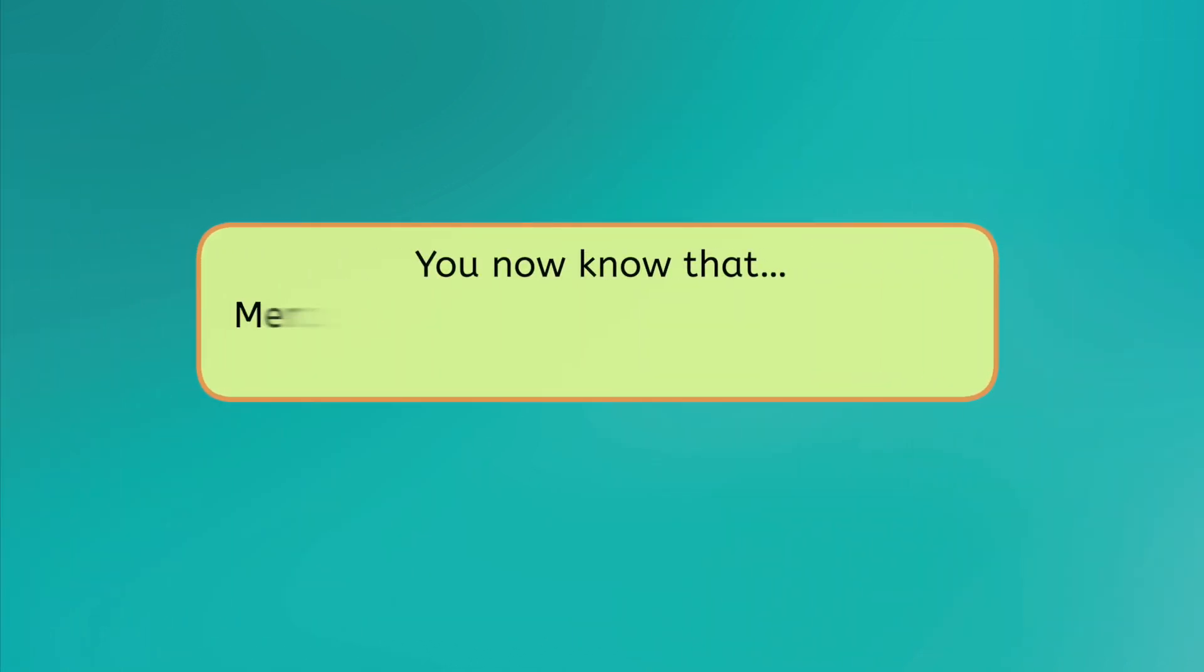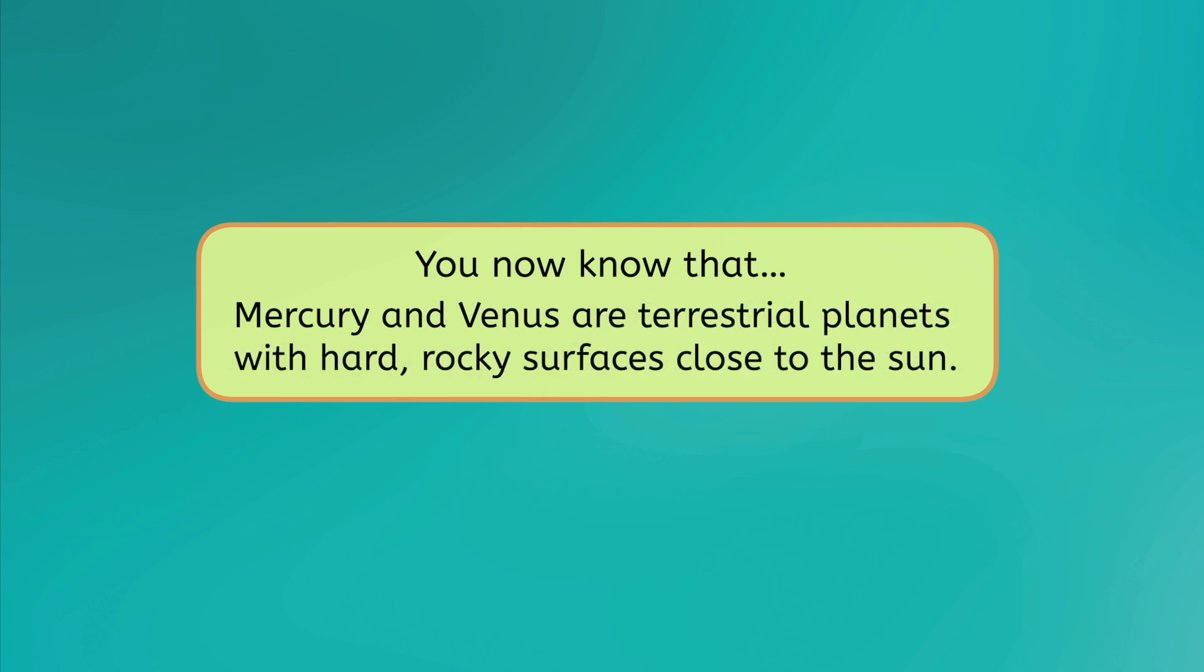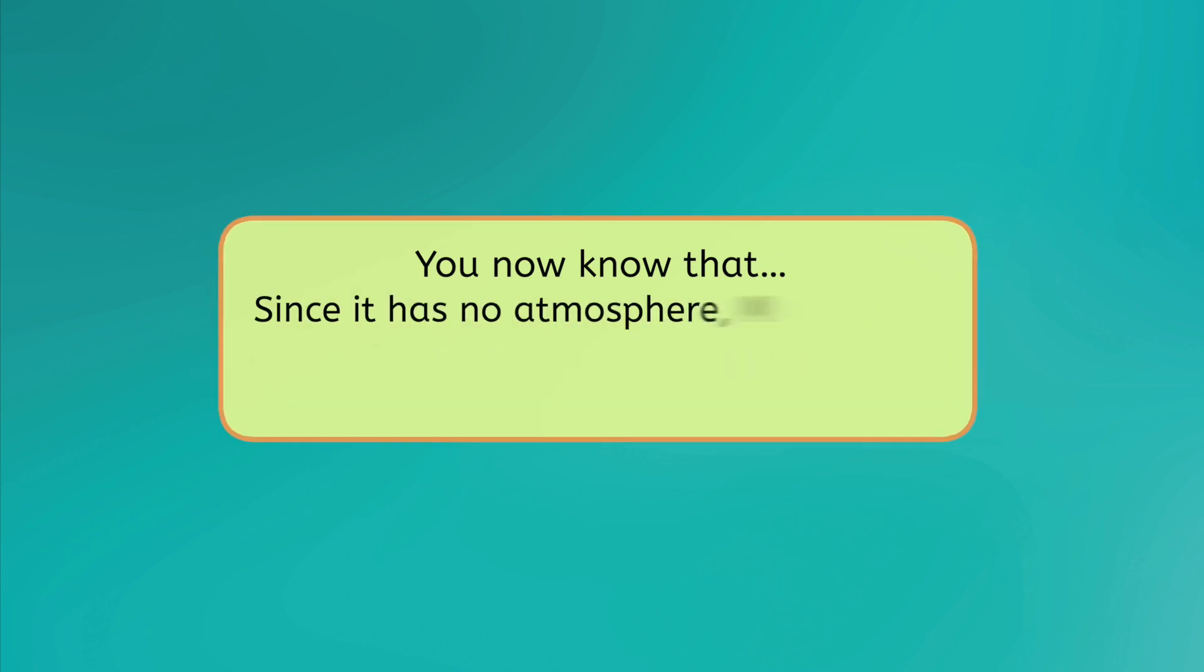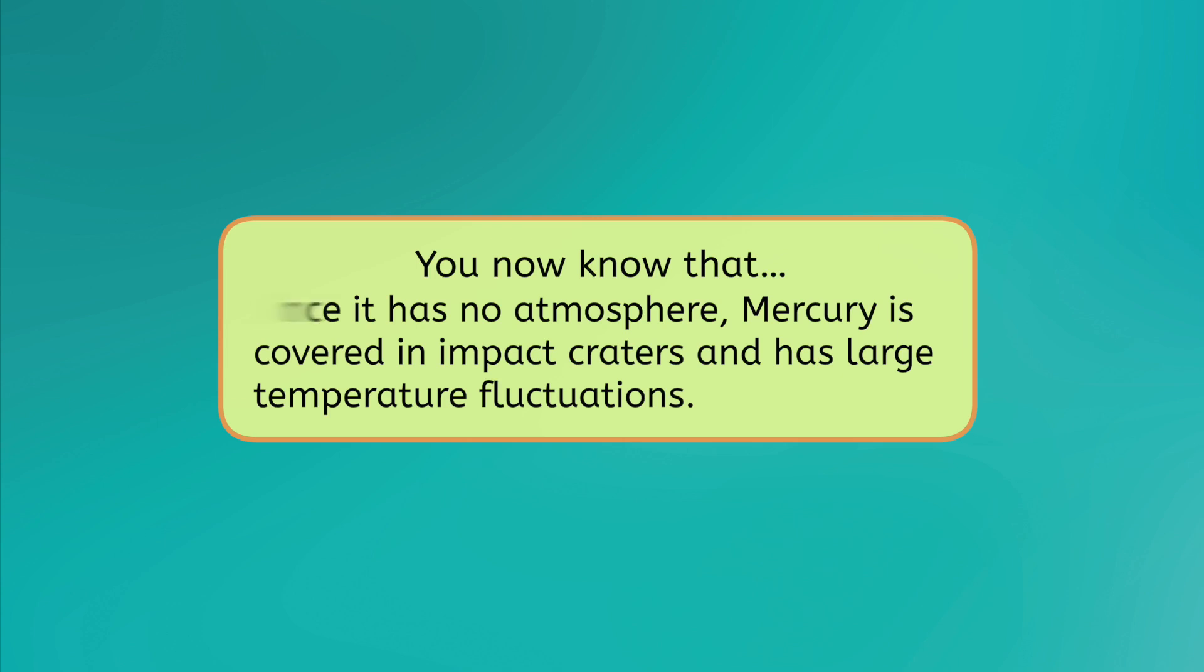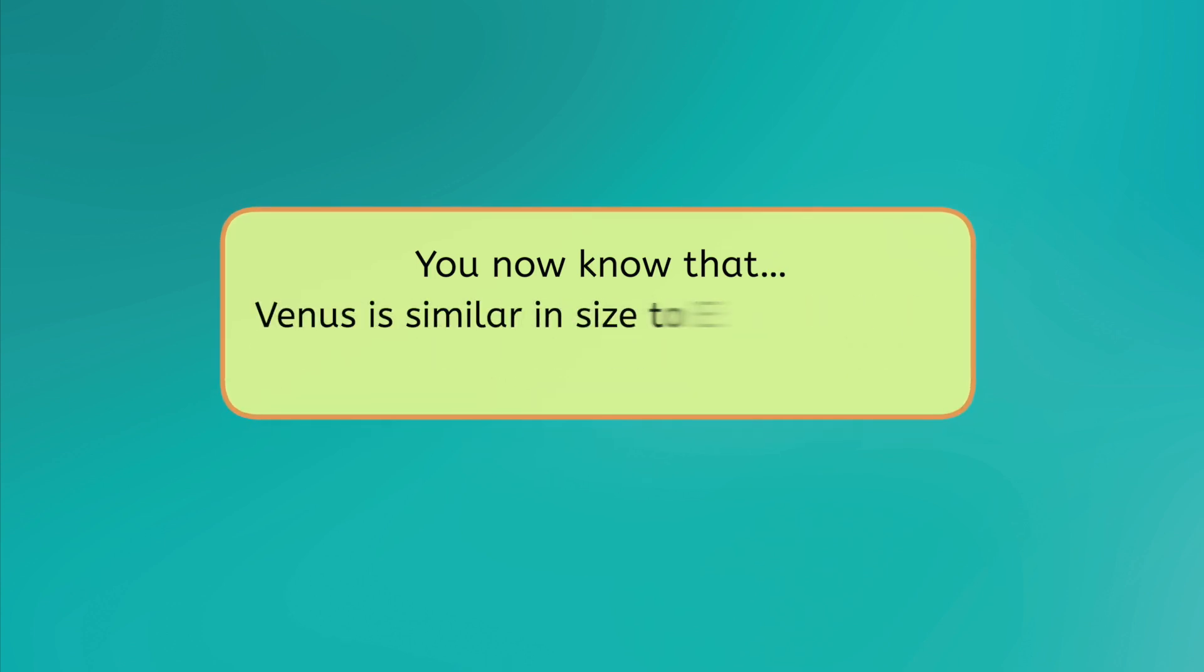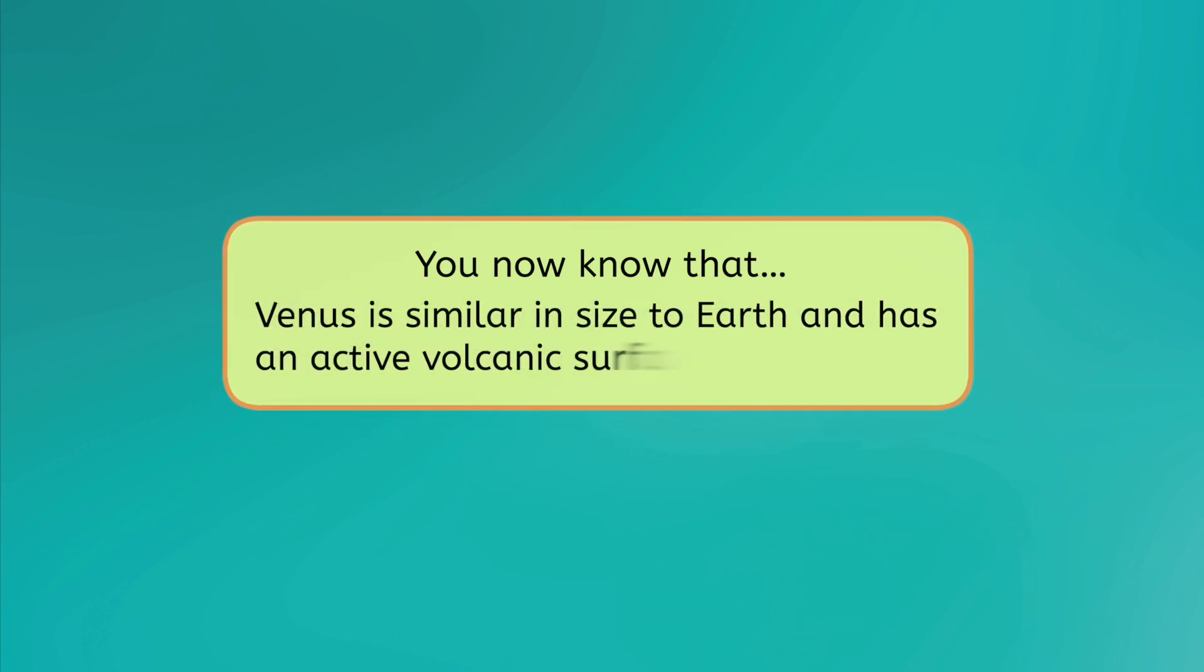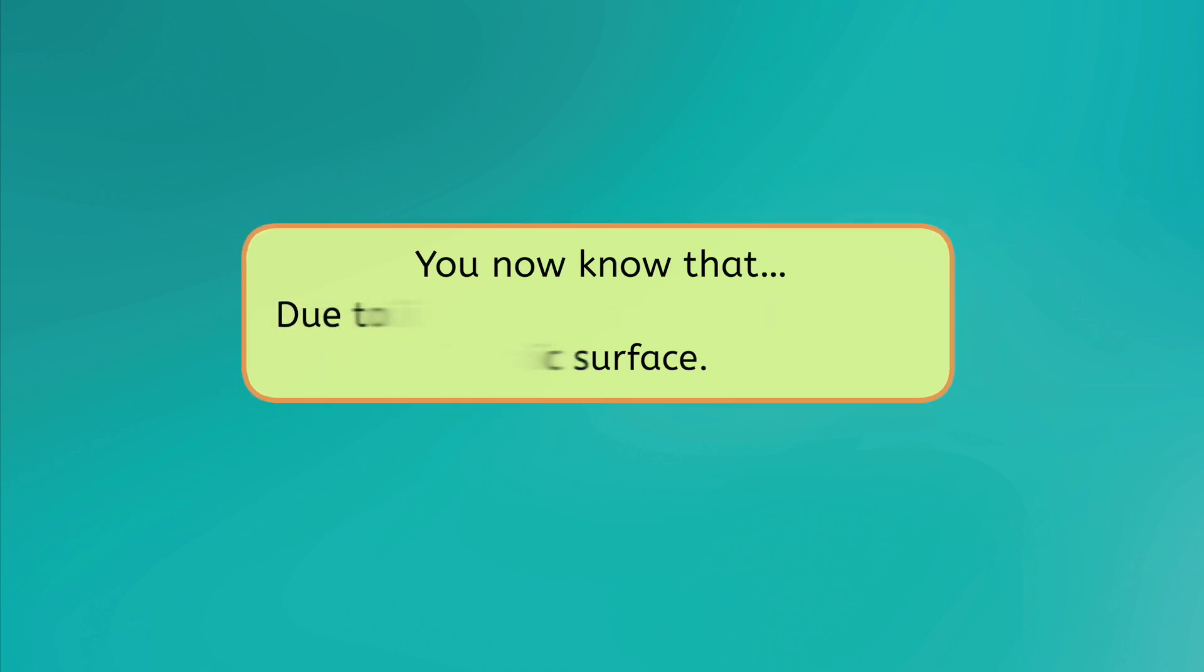You now know that Mercury and Venus, like Earth, are terrestrial planets with hard, rocky surfaces close to the Sun. Since it has no atmosphere, Mercury is covered in impact craters and has large temperature fluctuations. Venus is similar in size to Earth and has an active volcanic surface. Due to its thick atmosphere, Venus is extremely hot all of the time.